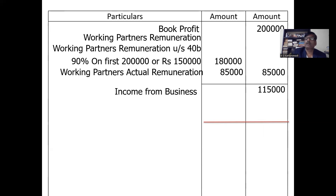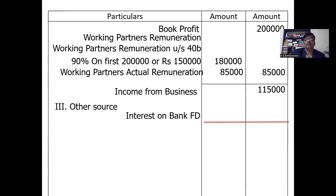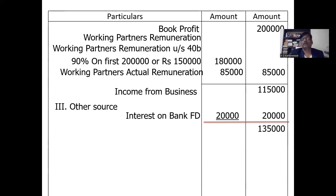Next, calculate other head income — income from other sources. Interest on bank FD is 20,000, which is the only income from other sources. So business income 1,15,000 plus other source income 20,000 equals 1,35,000, which is the gross total income.